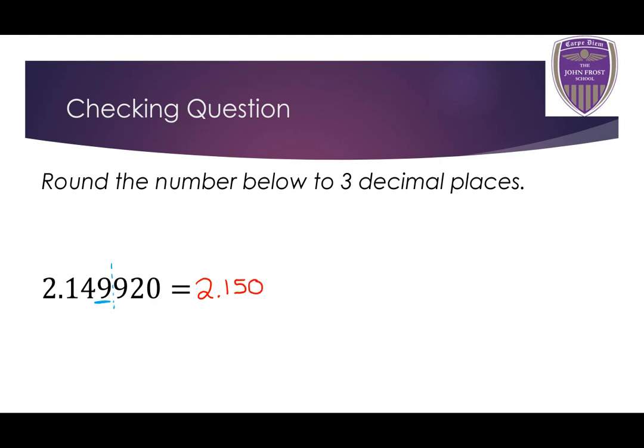Because the 9 is rounded up to 10, the 9 turns to a 0 and we add 1 to the 4, giving us 2.150. We have to leave that 0 on the end to show that we have rounded to three decimal places. Thank you for watching — I'll see you next lesson. Bye now.